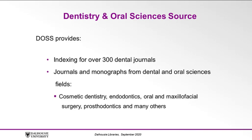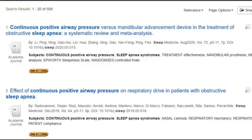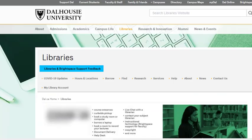This means you can search through tons of exclusively dental literature in one place. Even better, DOS also includes the full-text of more than 255 of these journals, which means the full-text of the articles is right there in the database. If the full-text link is not included with the item, you can still access it by clicking the Get It at Dal button to see if Dalhousie Libraries has it elsewhere, which we will explore later in this video.